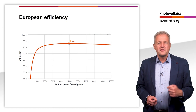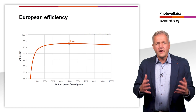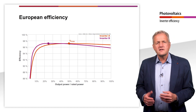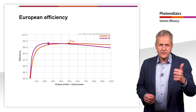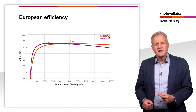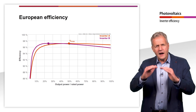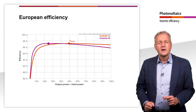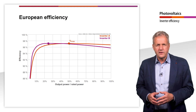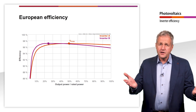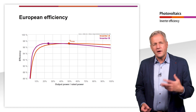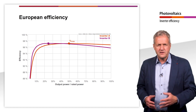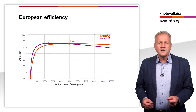To understand this, let's look at the efficiency curve of a second inverter. The peak efficiency is the same as for the first inverter. However, the efficiency is slightly higher in the lower partial load range but drops off more at higher powers. So, which inverter is better? To answer this question, we need a value other than the peak efficiency.